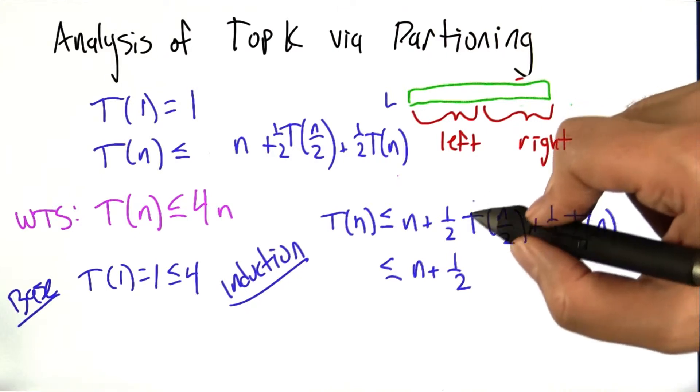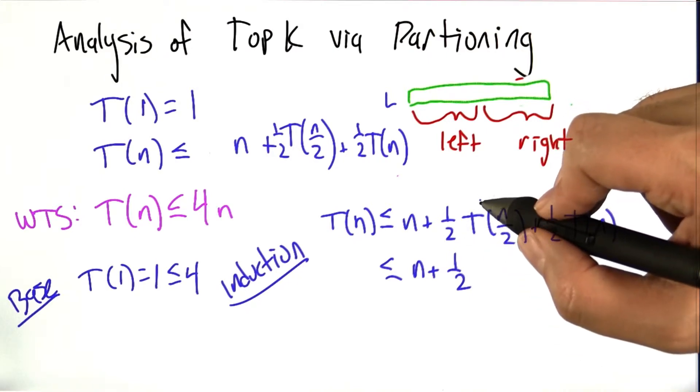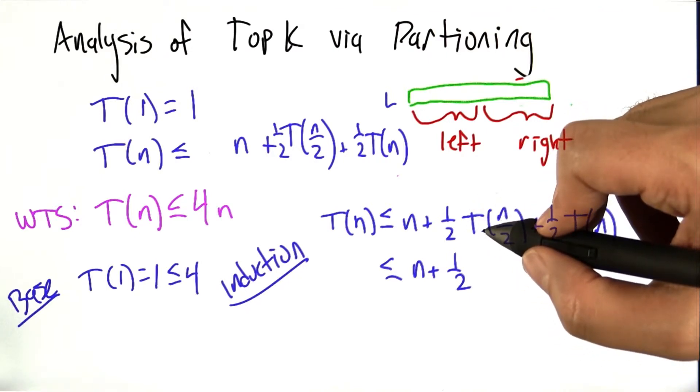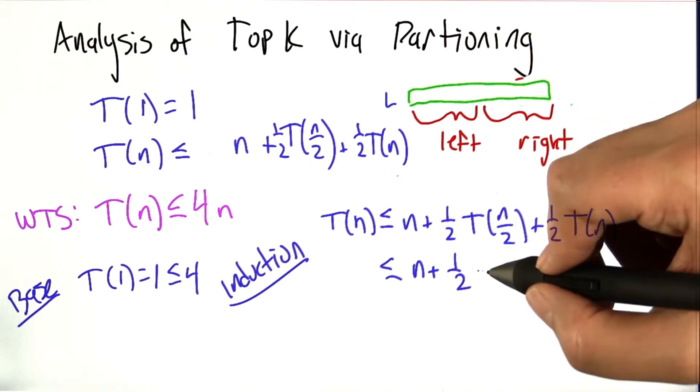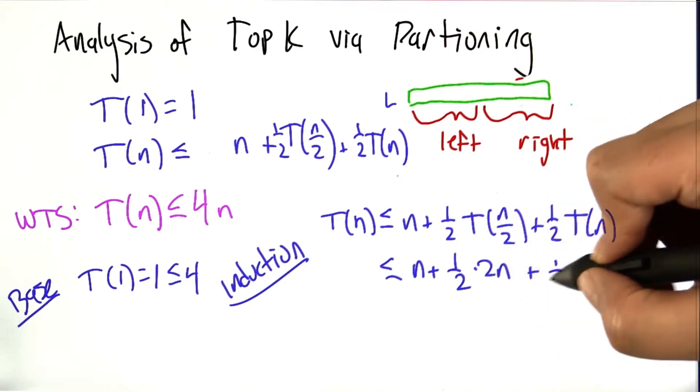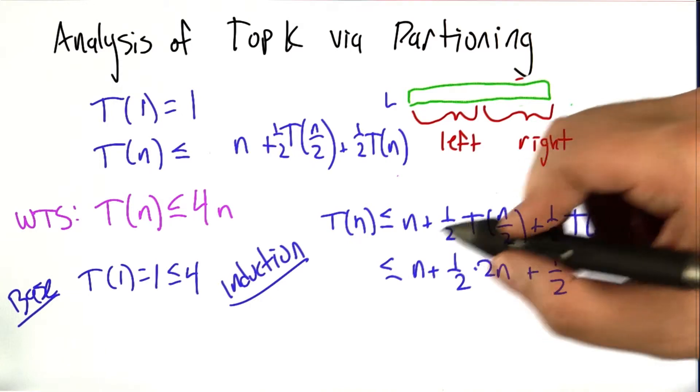So T of n over 2, we're assuming, is upper bounded by 4n over 2, which is 2n. And this quantity, T of n, we're assuming is less than 4n.